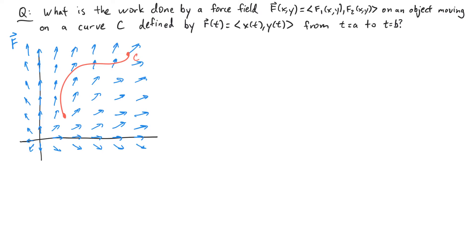Now I want to point out that the object doesn't necessarily have to move in the direction that the force field is pointing in. We are imagining that the object is moving along a fixed path. So sometimes the force field can point in the opposite direction of the object's motion, in which case it's possible to have negative work done.